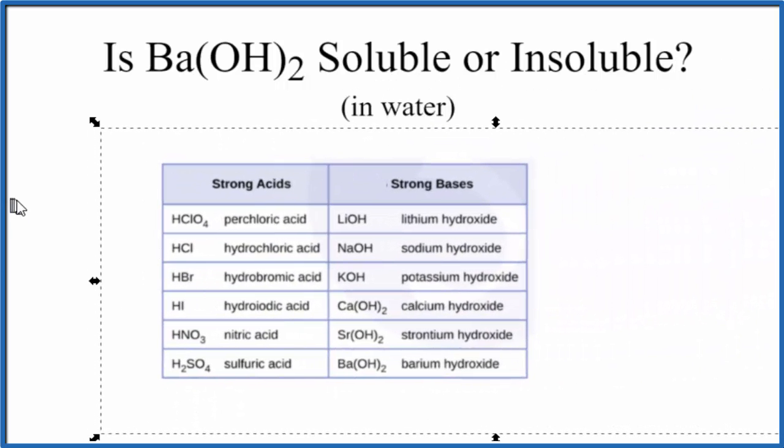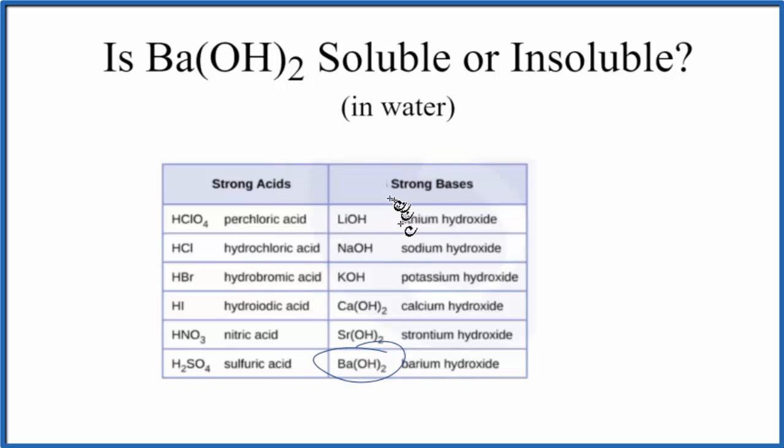So this is a list of common strong acids and strong bases. Good list to memorize. So you look down the list, you see barium hydroxide, that's considered a strong base. So we said it was slightly soluble or, according to our chart, soluble.